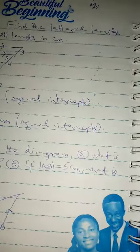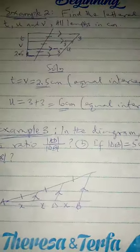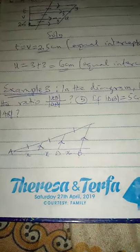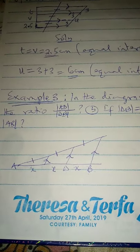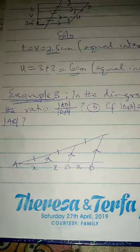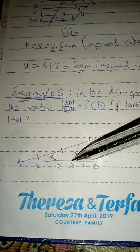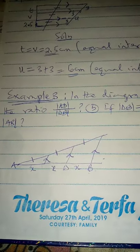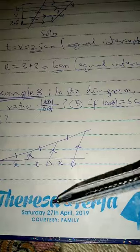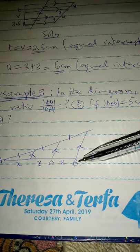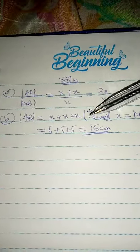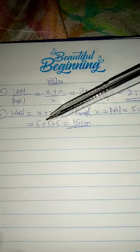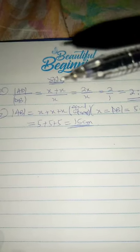Now, for part (b), DB is 5 cm and you have to find AB. Look at your diagram. You discover that AB is X plus X plus X — the distance from here to here is X plus X plus X. And DB is given as 5 cm, meaning X equals 5 cm. So, AB will be 5 plus 5 plus 5, which gives 15 cm.